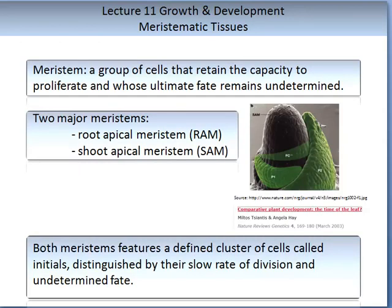The meristem is a term used often in this subject. It refers to a group of cells that retain the capacity to proliferate but whose fate is undetermined. There are two major meristems: the root apical meristem and the shoot apical meristem. Both have a defined cluster of cells called initials, distinguished by their slow rate of division and undetermined fate. The image on this slide is a scanning electron micrograph of a young maize apex from a genetics review paper, showing the shoot apical meristem at the top and the youngest leaf primordia (P1, P2) highlighted in green.